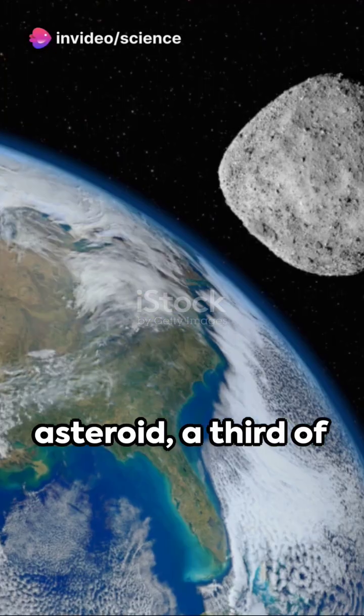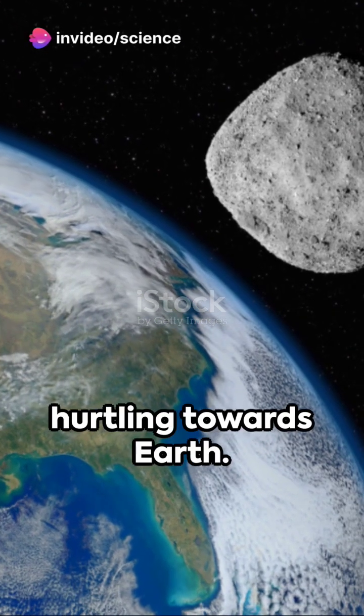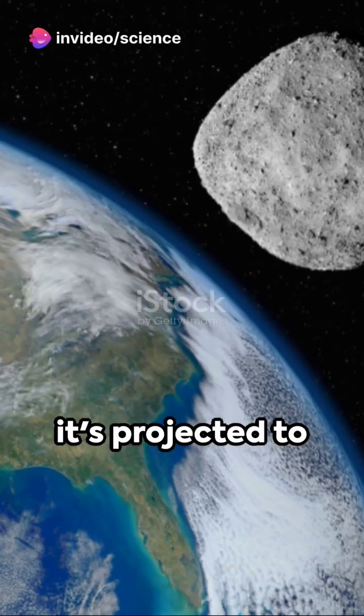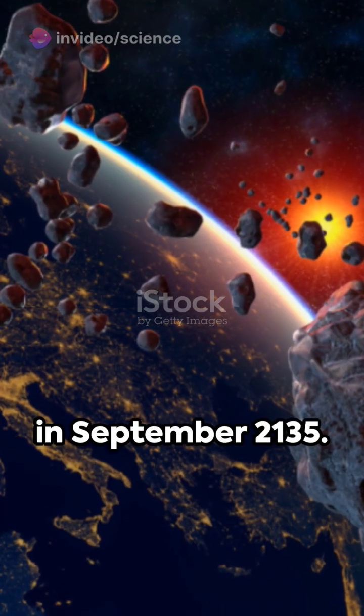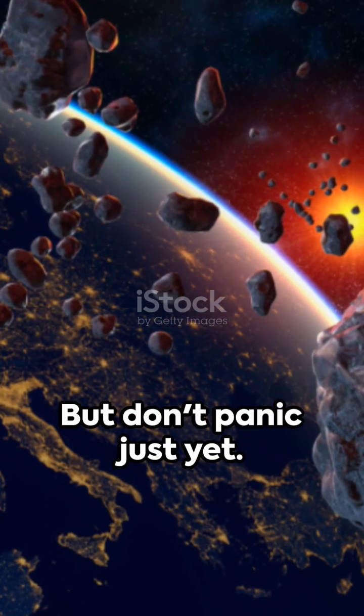Imagine a colossal asteroid a third of a mile in diameter hurtling towards Earth. It's named Bennu and it's projected to skim past our planet in September 2135. But don't panic just yet.